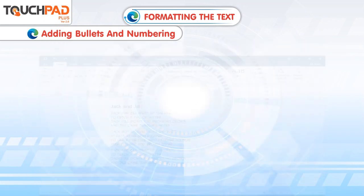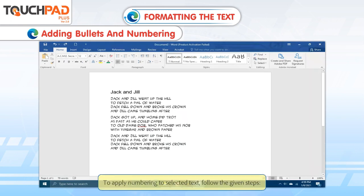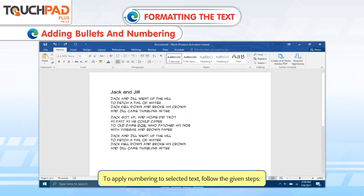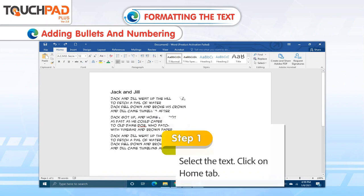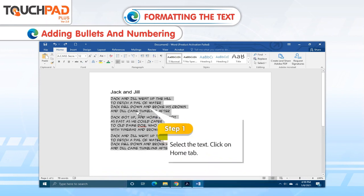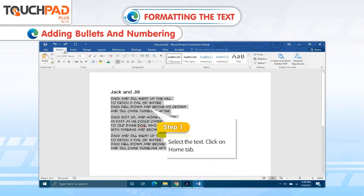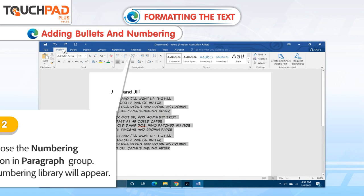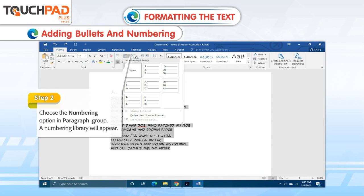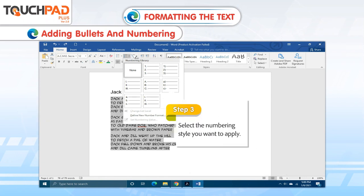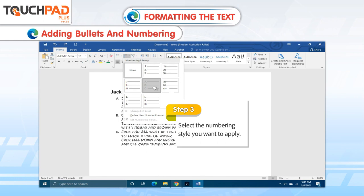Numbering. To apply numbering to selected text, follow the given steps. Step 1. Select the text. Click on Home tab. Step 2. Choose the Numbering option in Paragraph group. A numbering library will appear. Step 3. Select the numbering style you want to apply.